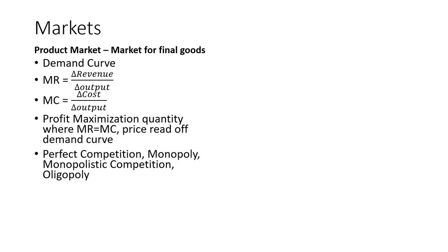When we look at the product market, we have to look at things slightly differently, and by looking at them differently, we have to use some different vocabulary. The factor market is the market for inputs into production.